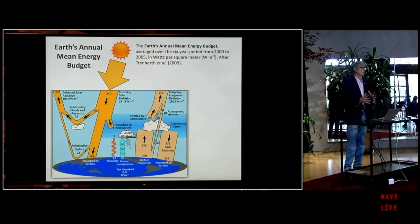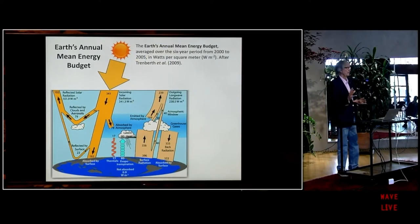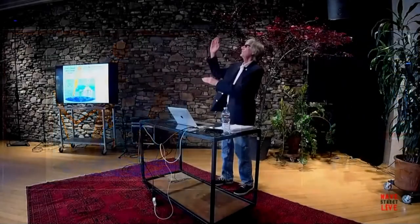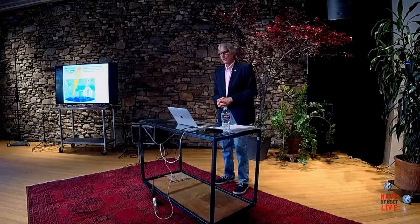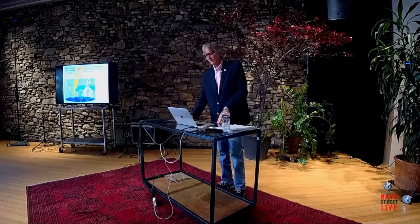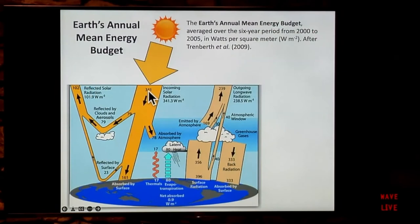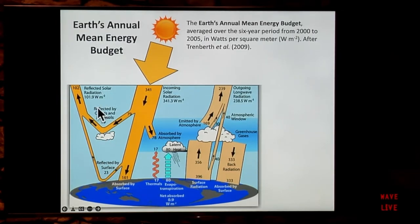What's a watt per square meter? Think about your 100-watt light bulb at home. Imagine all the heat and light coming from that projected on the ceiling on a one-meter square — that would be 100 watts per square meter. What you see here is incoming solar radiation of about 341 watts per square meter. Some of that is reflected off clouds and aerosols in the atmosphere and goes back out to space. Some is reflected from the surface, some is absorbed at the surface, and some is absorbed directly by the atmosphere.